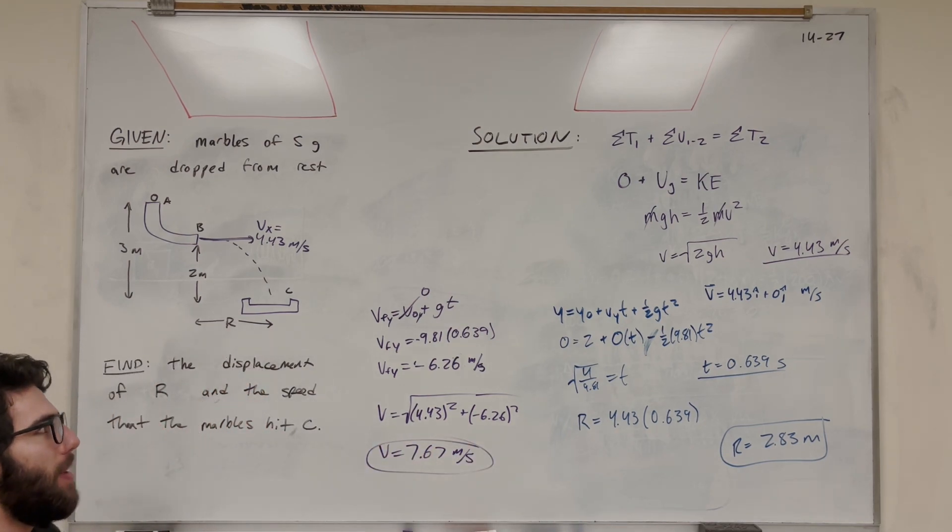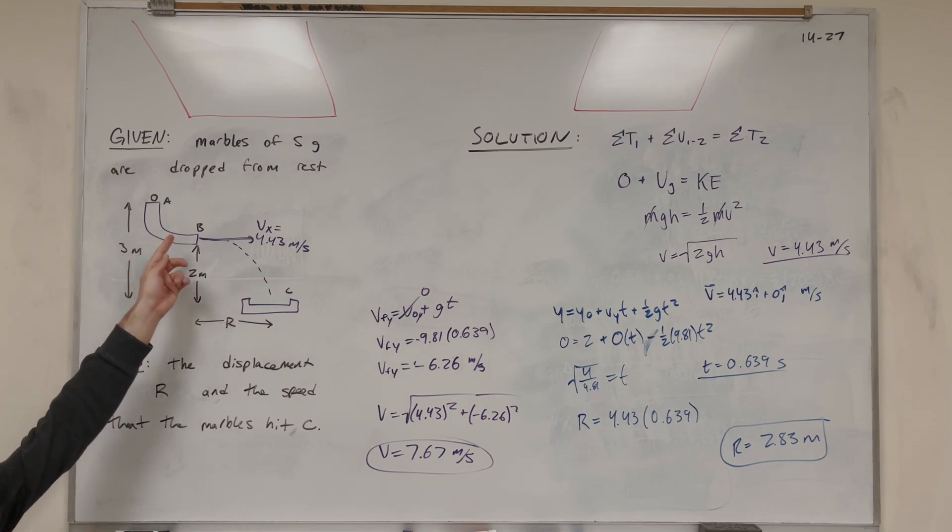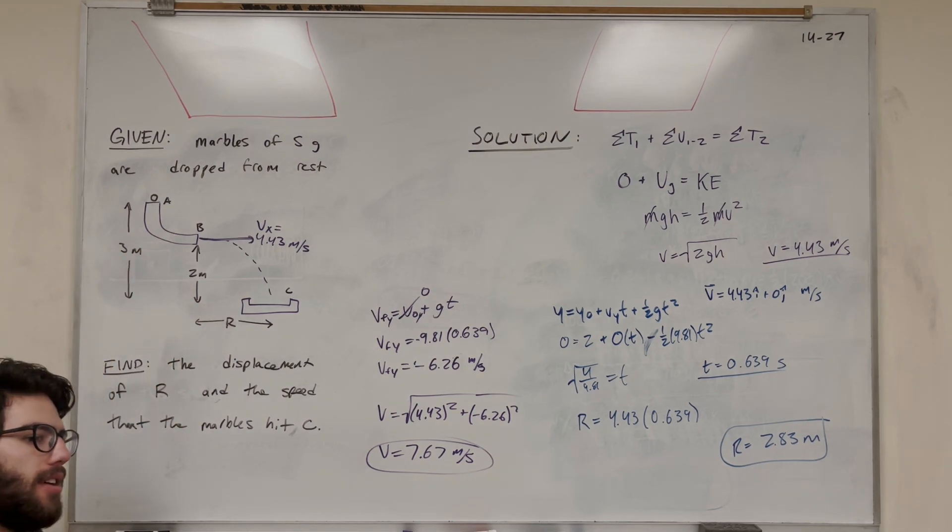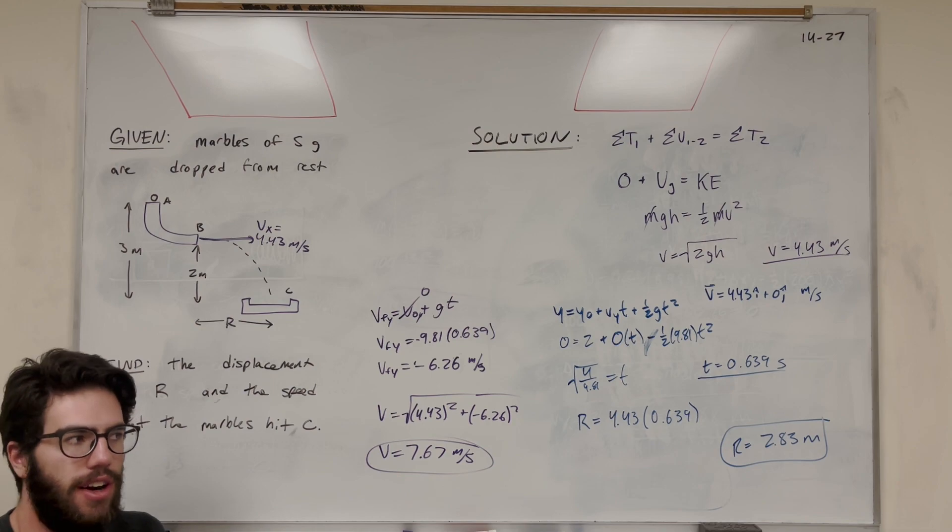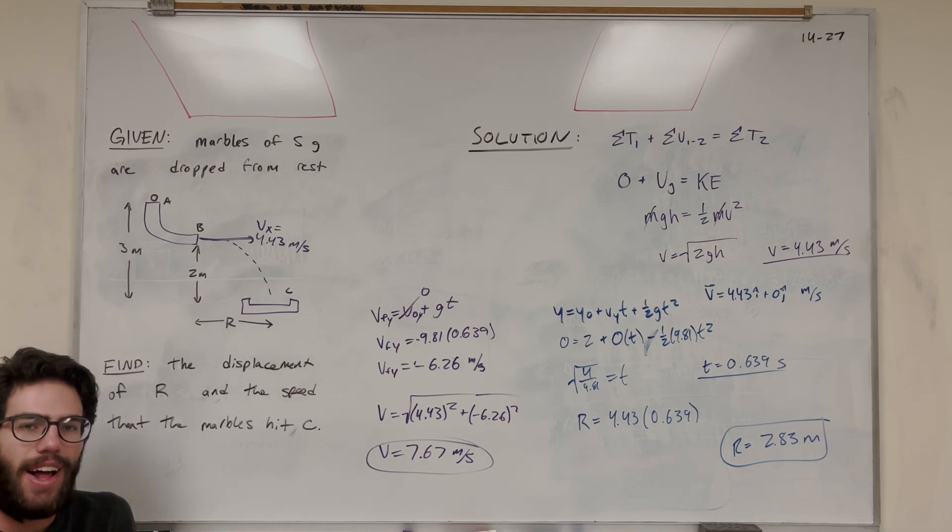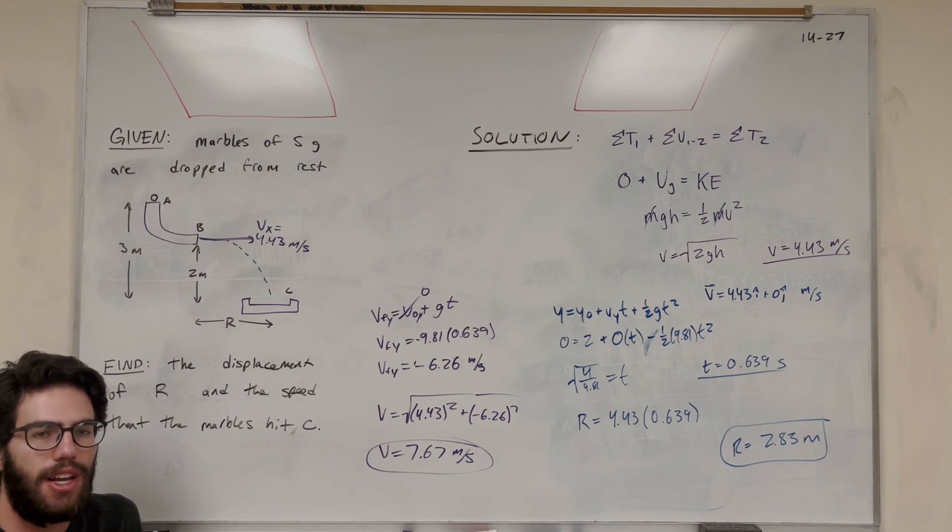So yeah, this is basically just a glorified kinematics problem, but we have to do a little bit of that work energy here at the A to B. So yeah, that's how you solve this kind of problem. Not too tricky - just make sure to use your equations and how I do those kinematics problems. And yeah, if you have any questions, check out my playlist, leave any questions in the comments, and I'll see you in the next video. Peace.